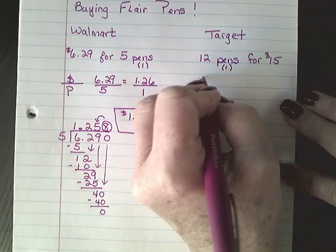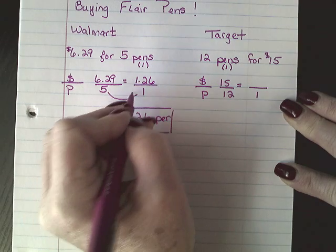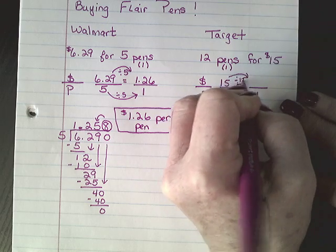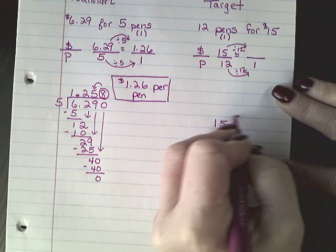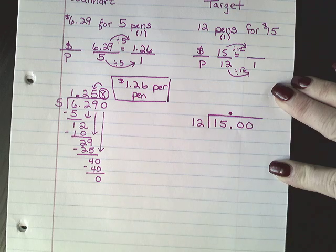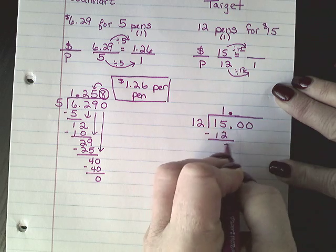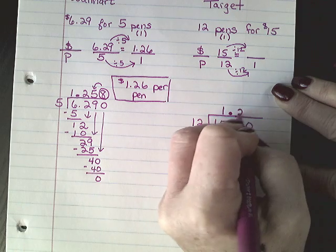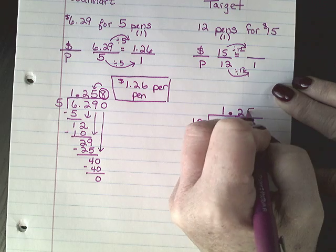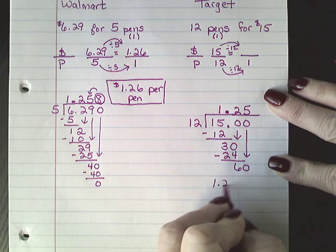Now what about Target? Same thing — money over pens: $15 over 12 pens. We're going to divide both sides by 12. I'll come down and do 15 divided by 12, adding a couple of zeros and placing the decimal point up top. Twelve goes into 15 one time — subtract 12. Twelve goes into 30 two times: 2 times 12 is 24, giving me 6. Bring down the zero, and that gives $1.25. So for Target it's $1.25 per pen.